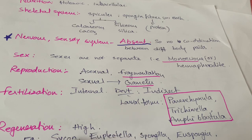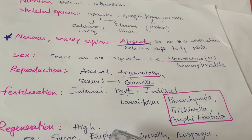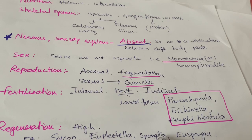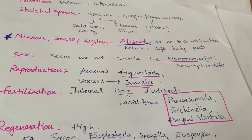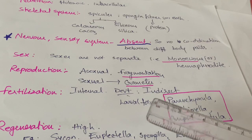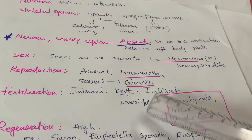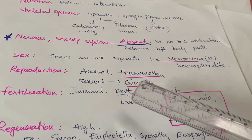Examples of sponges include Sycon, Euplectella — commonly known as Venus' flower basket (the common and scientific name of Euplectella is important for examinations) — Spongilla, which is a freshwater sponge, and Euspongia, commonly known as the bath sponge. By observing these characters, evolutionists consider Porifera a blind offshoot of animal classification.